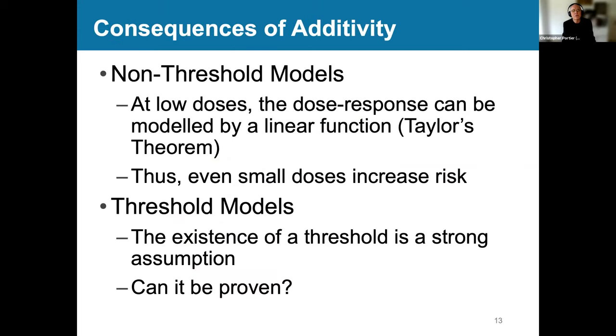Okay. So consequences of additivity. For non-threshold models, there's no area where nothing happens. If you've already got a process ongoing, like, say, estrogen receptor and toxicity associated with endogenous estrogen, like breast cancer and things like that, then even small doses of a chemical that enter into that process can increase the risk. There's no apparent threshold, theoretically. Threshold models is a very strong assumption. And can it be proven? So many people have spent a lot of time looking at that question. And I'm going to show you a little bit of it in some of the work that we did.